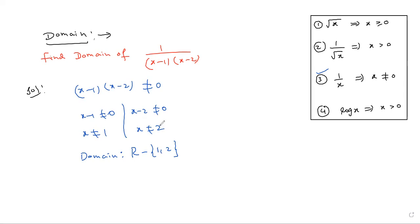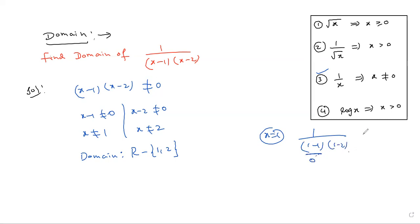x not equal to 1 and x not equal to 2 — that means you should not take 1 or 2. In the total R set, just ignore only 1 and 2. Domain means input; you should not get infinity. If you take x equal to 1, you get 1 minus 1 into 1 minus 2, which is 0 in the denominator — something by 0, which is infinity. You cannot give infinity as your answer.